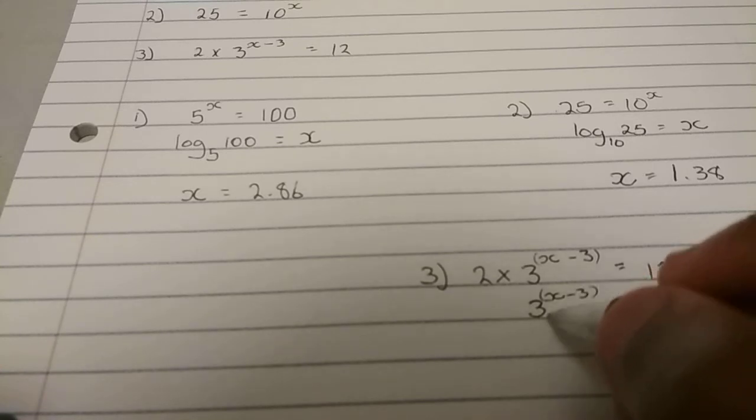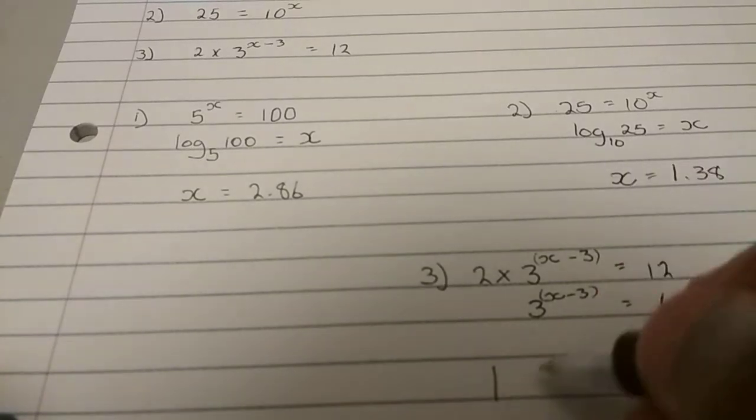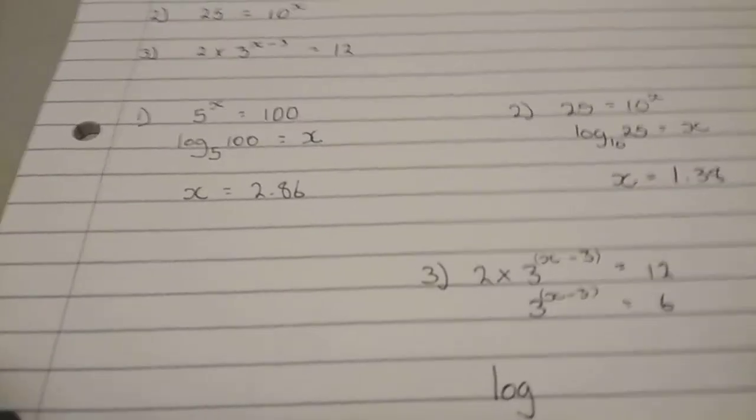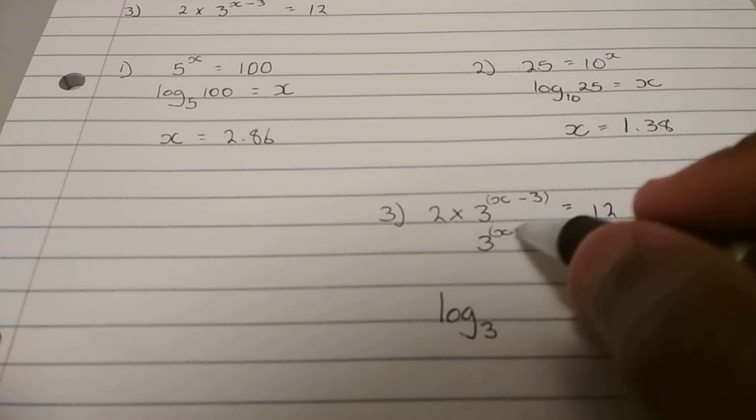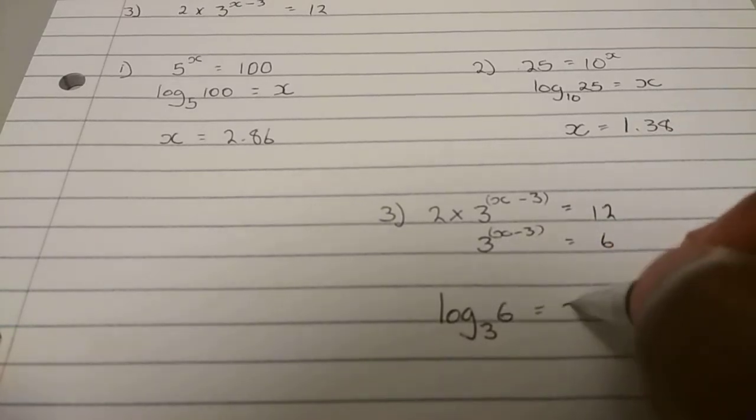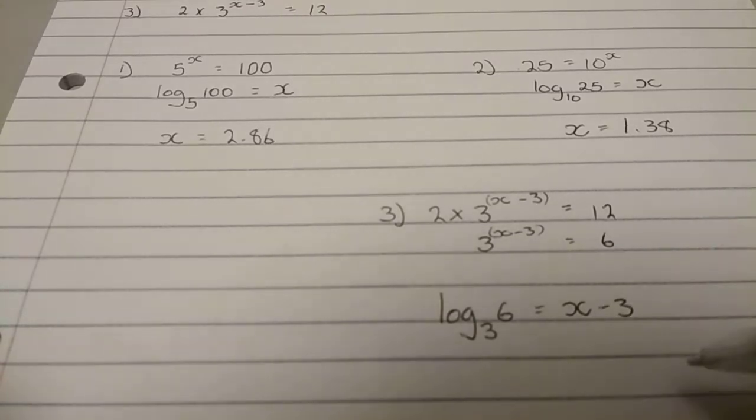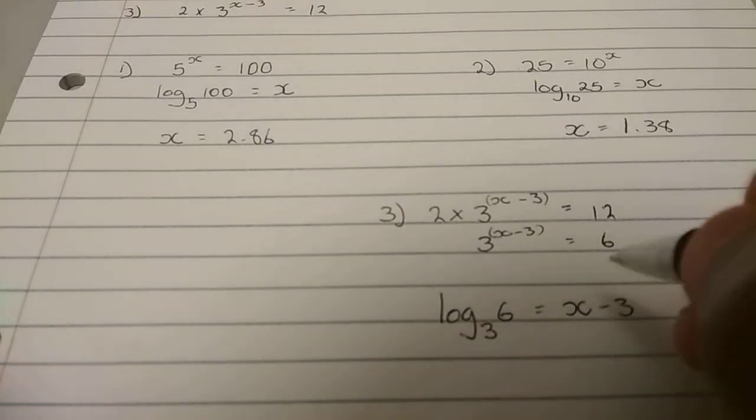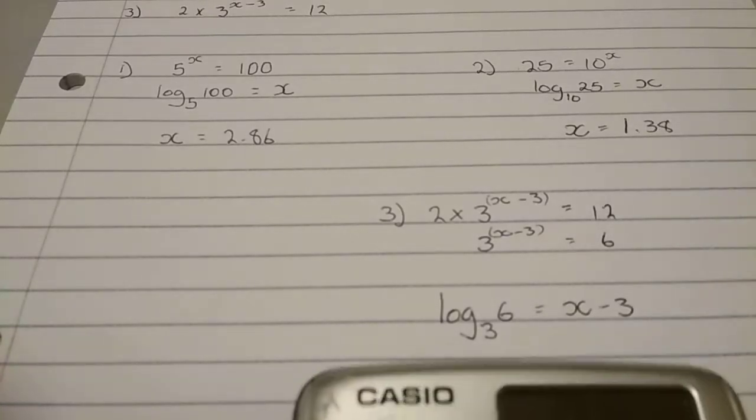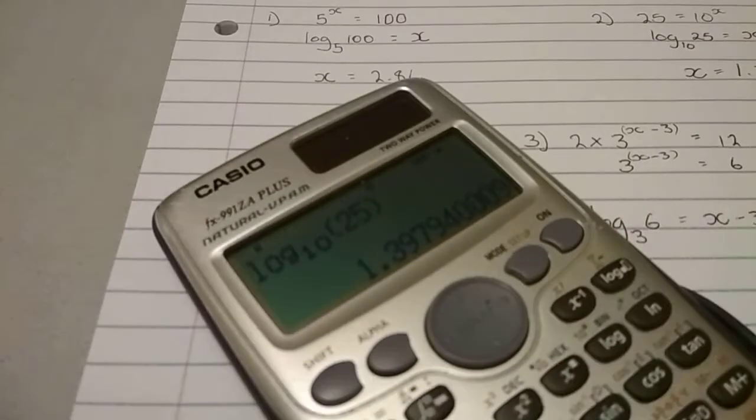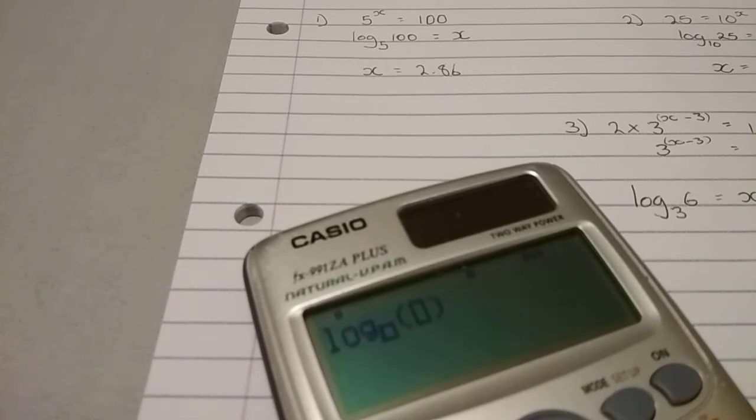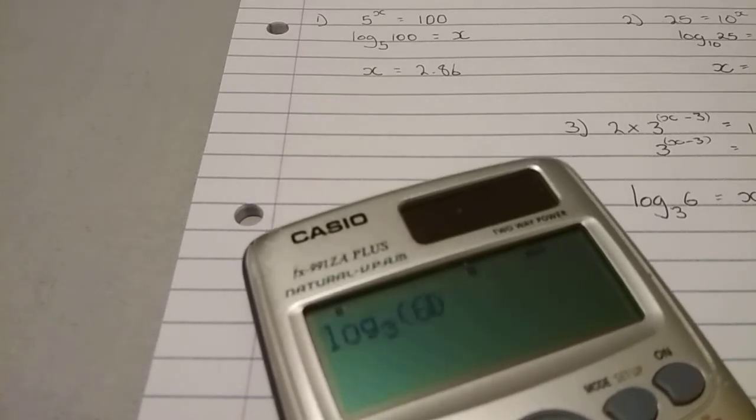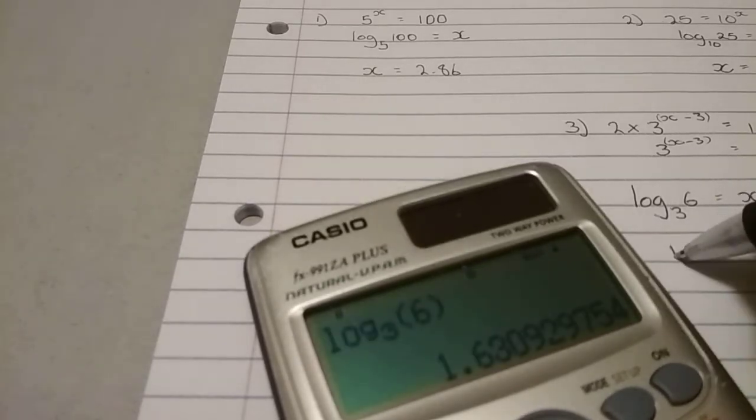From there we have it in simple exponent form. So we apply our rules. Log. A base of, what's our base? Our base is 3. And then what's left? Swap it. Which means the 6 comes this side and then the x minus 3 goes that side. Now you can just use a calculator to get. So you'll have log 3 and then there you have a 6. And you get 1.63 is equals to x minus 3.